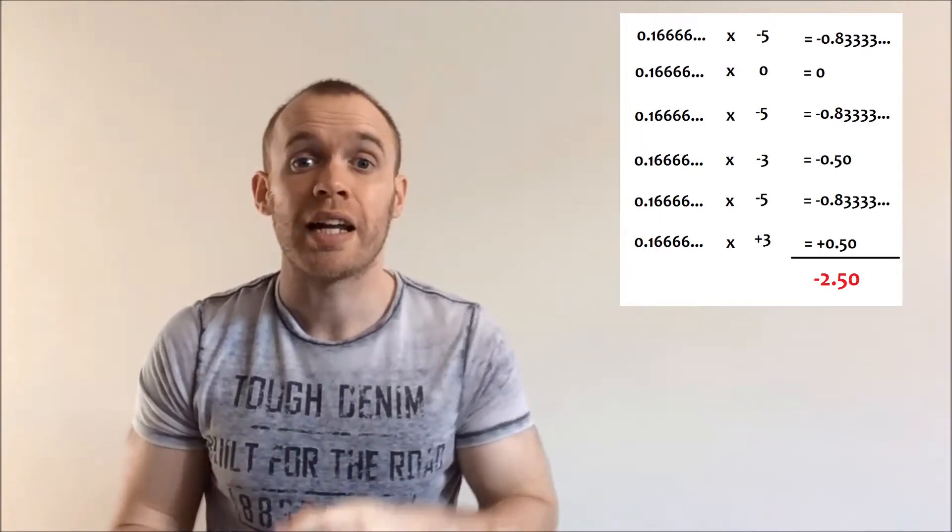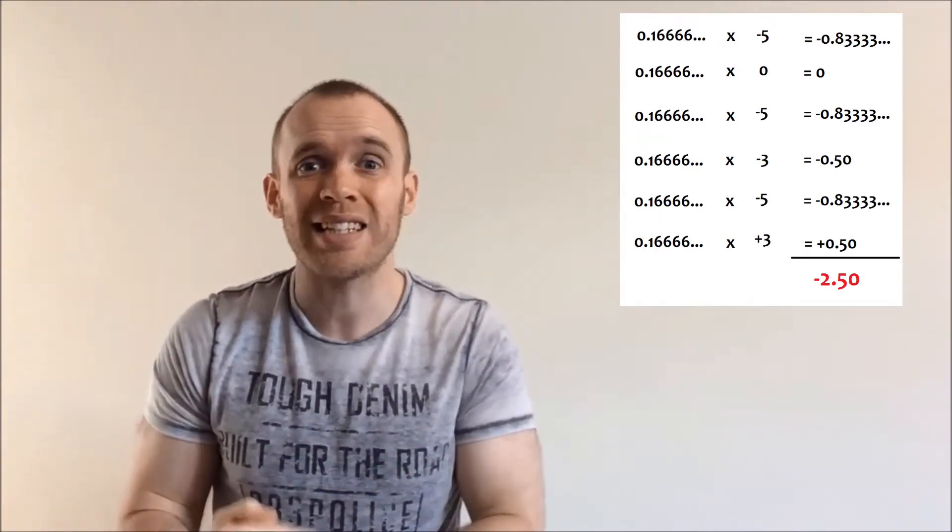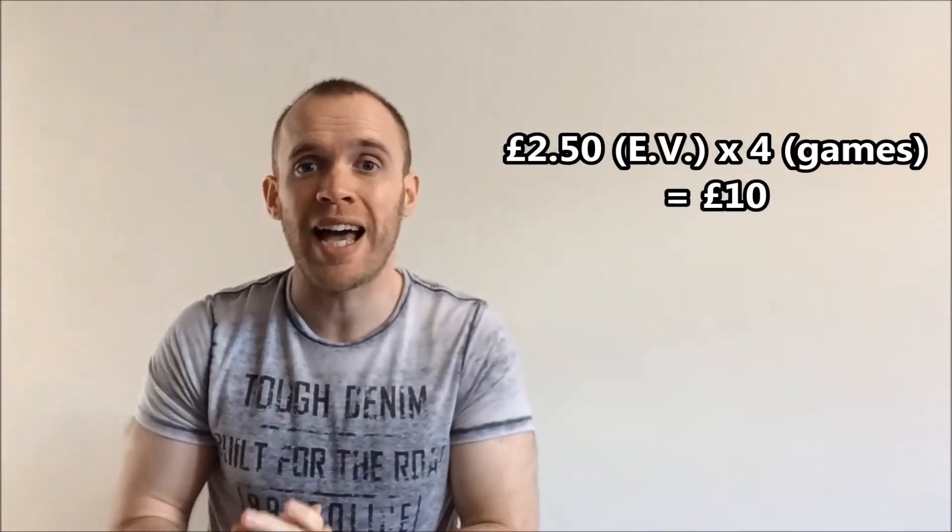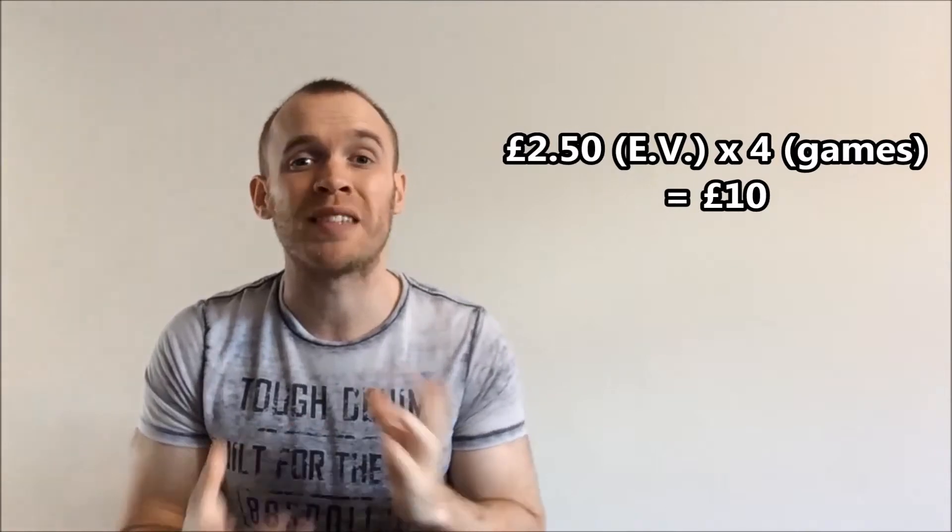And since it's below zero we could call it an expected loss. Now your loss is the stall owner's gain, so he's going to be up 2.5 for every transaction. That means if people play four times every hour, he has an expected profit of 10 pounds an hour.